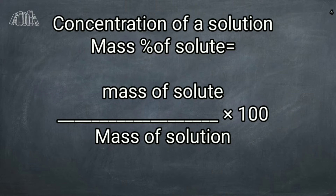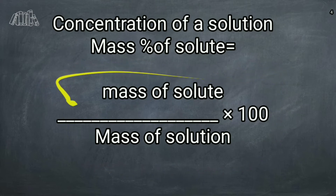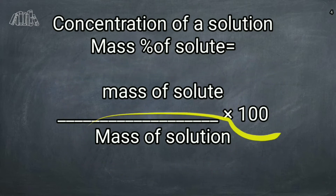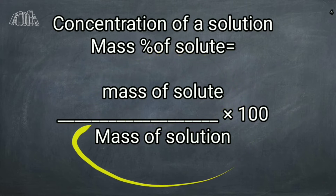If they have given you the mass of solute and solvent and ask you to find out the mass percentage, this is the formula: mass percentage of solute equals mass of solute divided by mass of solution, multiplied by 100. If the problem gives you the mass of solution directly, substitute it. But if only the mass of solute and mass of solvent are given, we need to find the mass of solution separately.